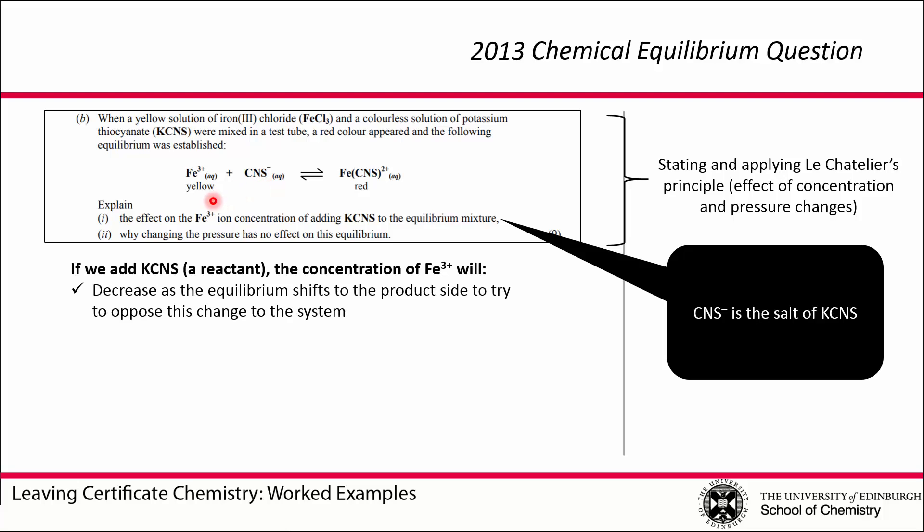Adding in a reactant means the equilibrium will shift towards the product. Therefore the concentration of the other reactant, Fe3+, will decrease.